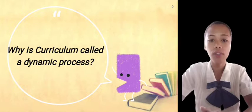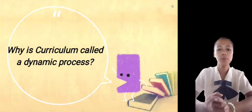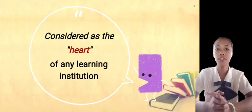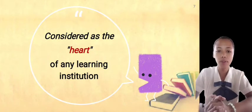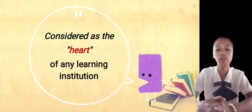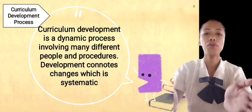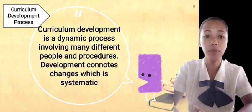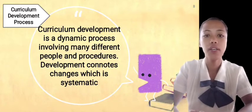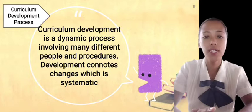Why is curriculum called a dynamic process? Curriculum is called a dynamic process because it is considered the heart of any learning institution, which means schools cannot exist without curriculum. With its importance in formal education, the curriculum becomes a dynamic process due to the changes that occur in our society. Curriculum development is a dynamic process involving many different people and procedures, such as teachers, curricularists, and many more. Development connotes changes which are systematic.